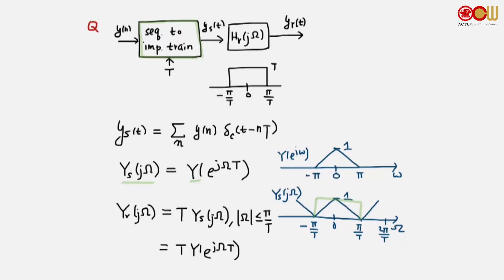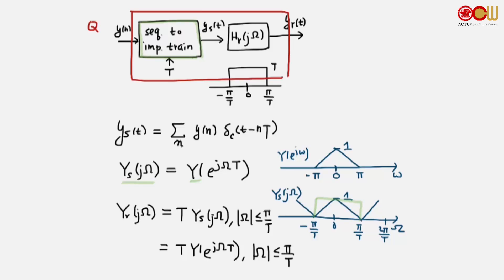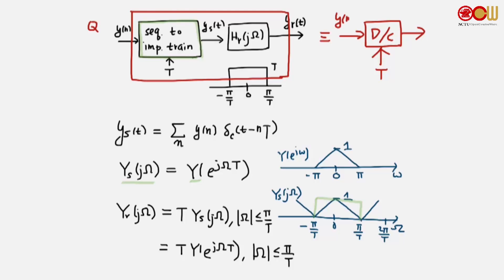This is how Y_r and the Fourier transform of the sequence y[n] are related. Usually we combine the sequence-to-impulse-train and reconstruction filter blocks together and call it a discrete-time to continuous-time (D-to-C) converter, with T at the bottom to indicate how the conversion is done. The input is a discrete-time sequence and the output is a continuous-time signal.